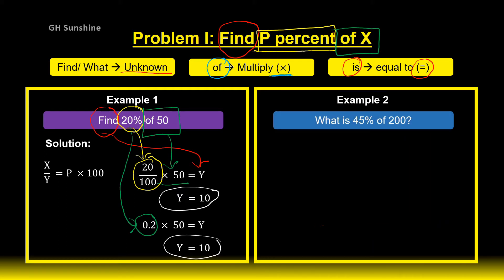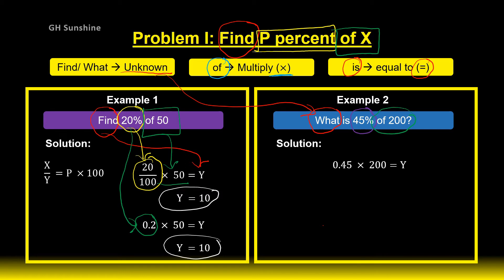Let's try another example. What is 45 percent of 200? 'What' here is the unknown, and 'is' means equal to. Then 45 percent — you can convert to decimal or fraction form. 'Of 200' means you need to do multiplication. Using decimal form: 0.45 times 200 equals Y. Calculate Y — Y equals 90. These two examples represent the first basic problem of percentage: find P percent of X.